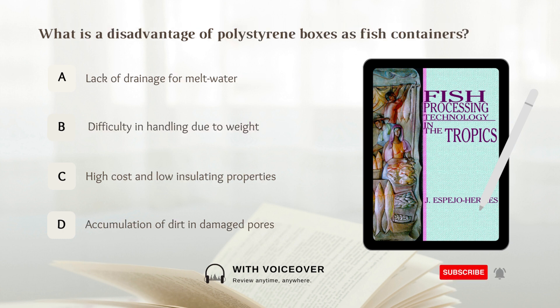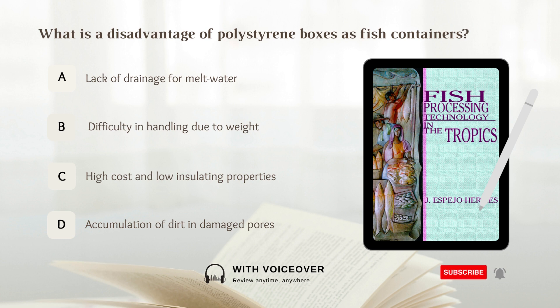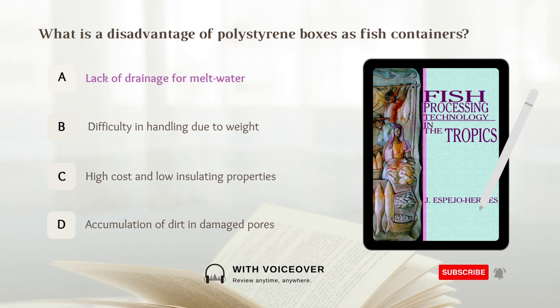What is a disadvantage of polyethylene boxes as fish containers? Options: A. Lack of drainage for melt water. B. Difficulty in handling due to weight. C. High cost and low insulating properties. D. Accumulation of dirt in damaged pores. Answer: A. Lack of drainage for melt water.